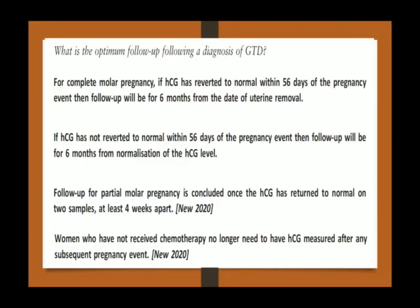What is the optimum follow-up following a diagnosis of GTD? Follow-up includes monitoring HCG until it has returned to normal on two samples at least four weeks apart, after which she can be discharged from follow-up. Women who have not received chemotherapy no longer need to have HCG measured after any subsequent pregnancy event.